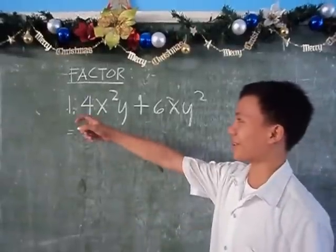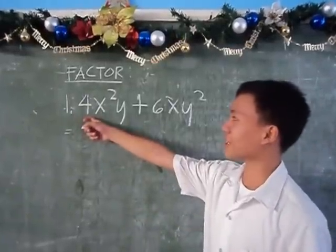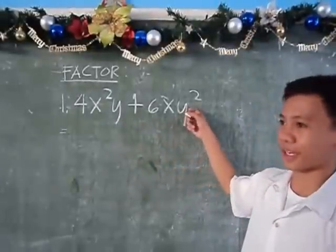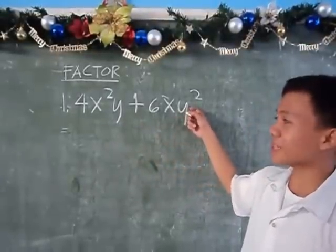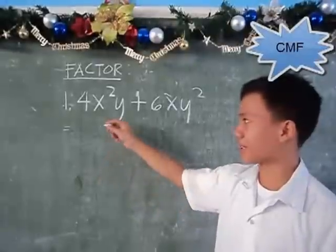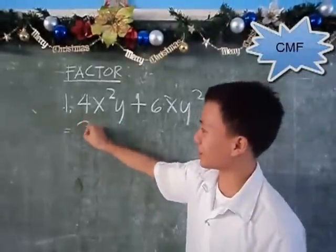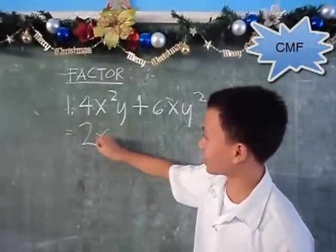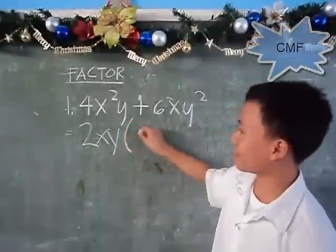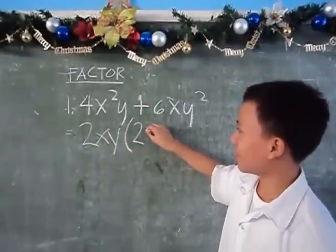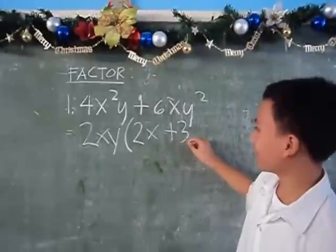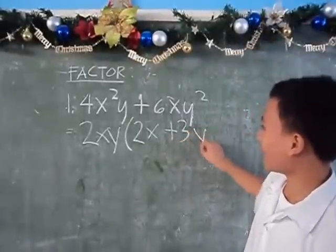To factor 4x² y plus 6xy², we must get the whole polynomial factored. The common monomial factor is 2xy, so the result is 2xy times (2x plus 3y).